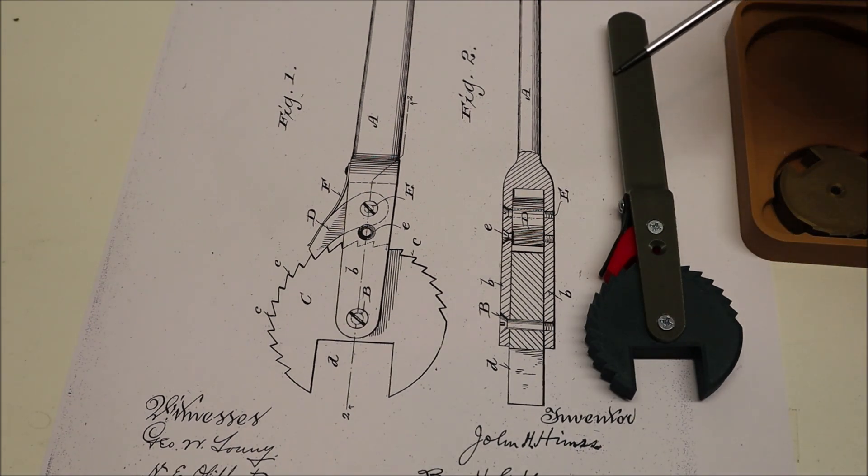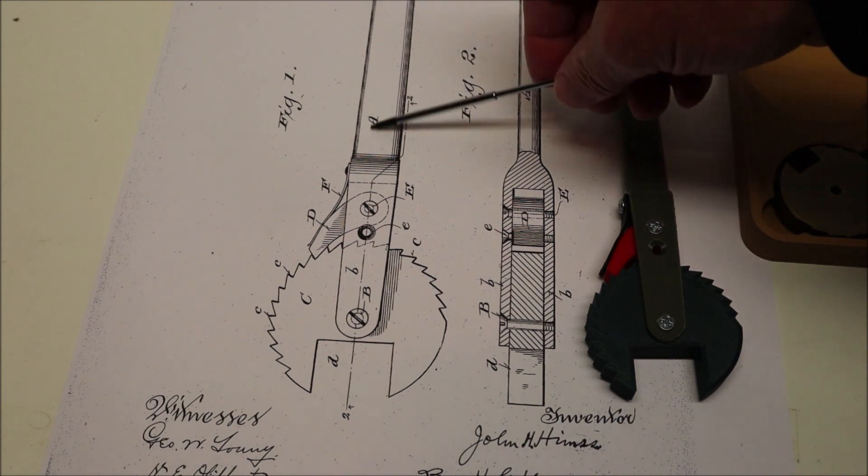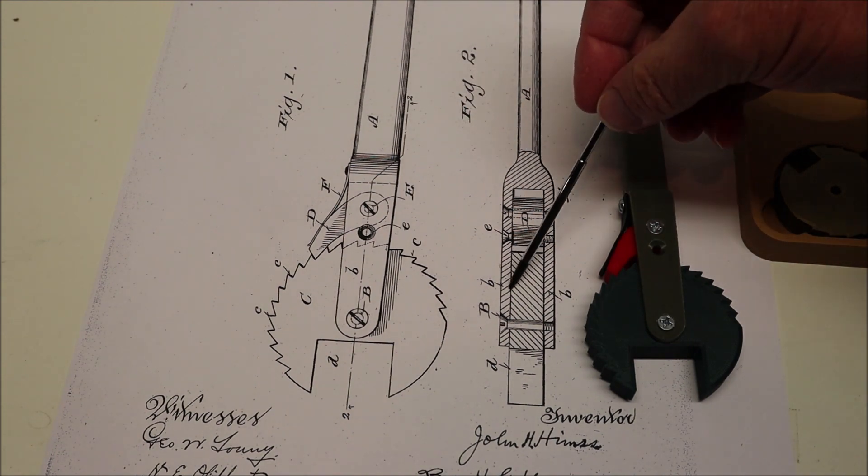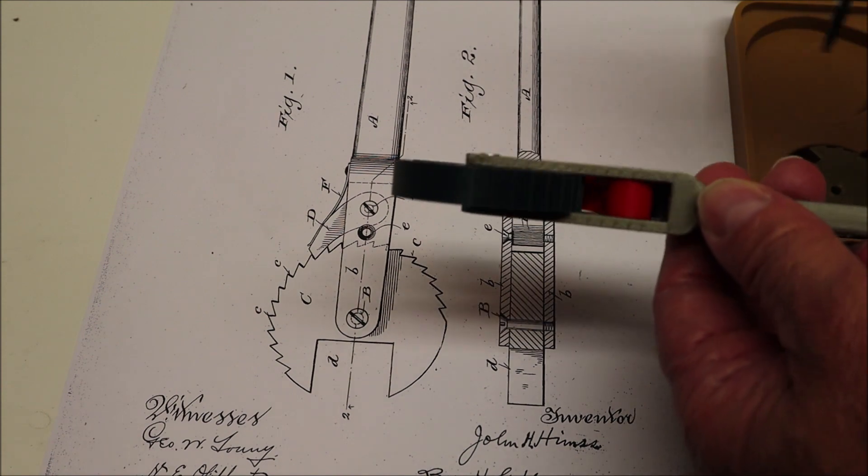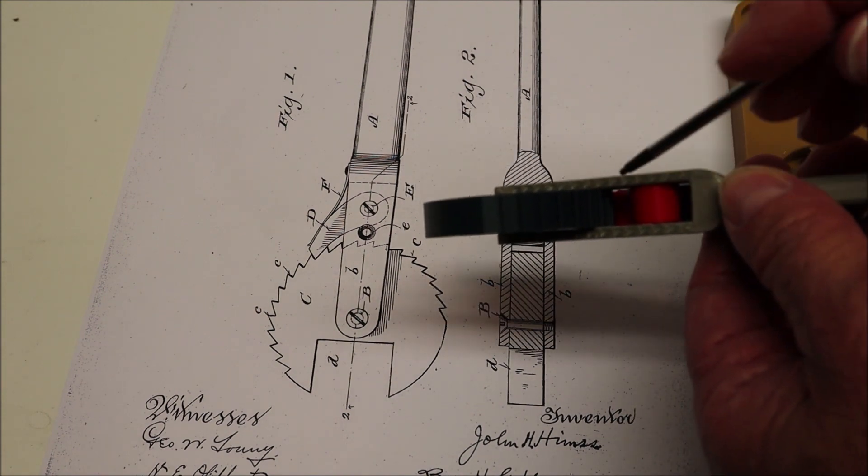In this drawing he refers to letter A being the handle of the wrench and one end of the wrench being forked. And that's what you see here, the two forks of the wrench.